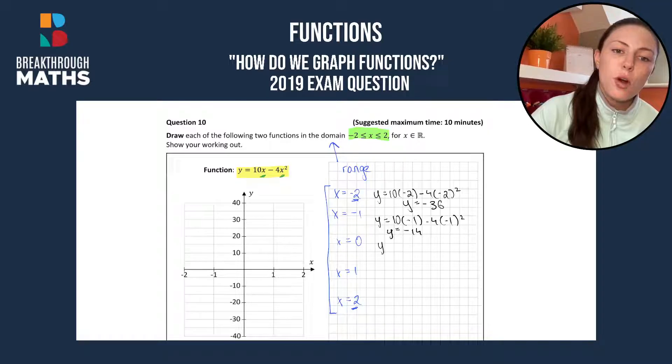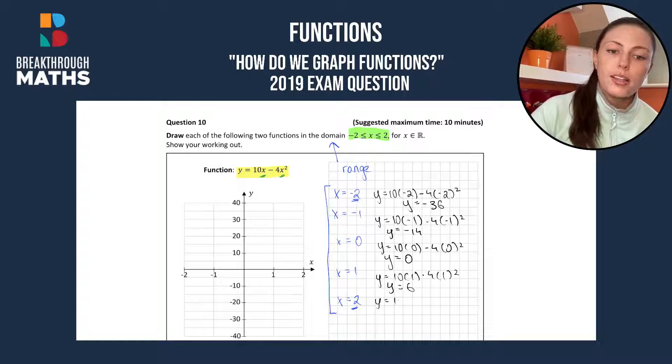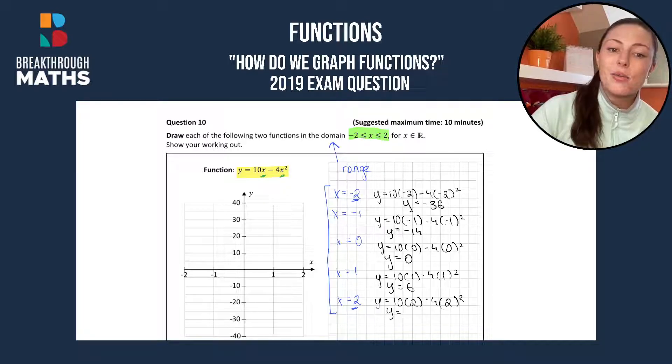When x is 0, y is going to be equal to 10 times 0 minus 4 by 0 squared, and that also gives us y is 0. When x is 1, y is going to be 10 times 1 minus 4 by 1 squared which gives y is 6. And finally when x is 2, y is 10 times 2 minus 4 times 2 squared, and we get y equals 4.